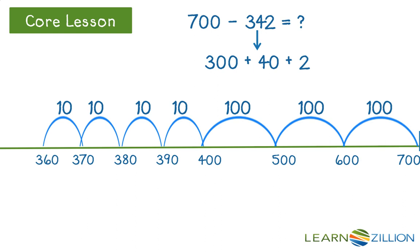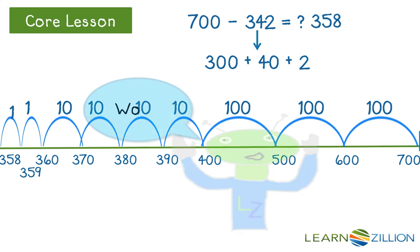Finally, I'll take away two ones, so 359 and 358. So 700 minus 342 equals 358.